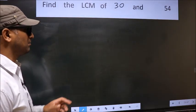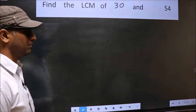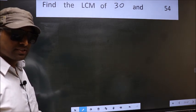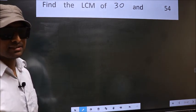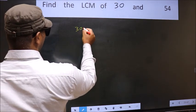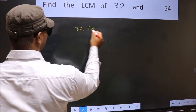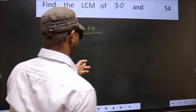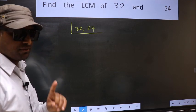Find the LCM of 30 and 54. To find the LCM, first we should frame it in this way: 30, 54. This is your step 1.